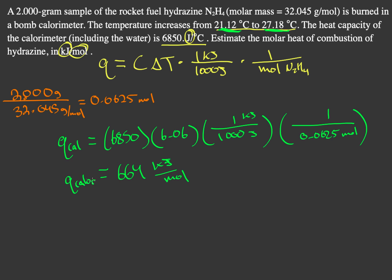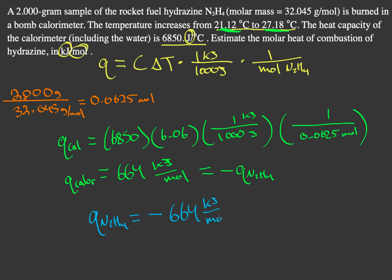The heat of combustion for the calorimeter is equal to the negative of the heat of combustion for hydrazine, because if one is exothermic, the other is endothermic — one is losing energy and the other is gaining it. So the final answer for the heat of combustion of hydrazine is negative 664 kilojoules per mole.